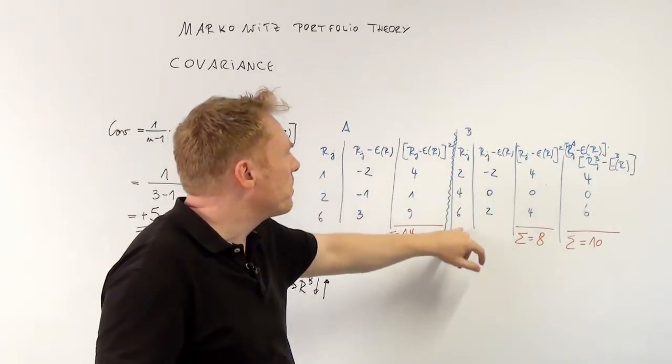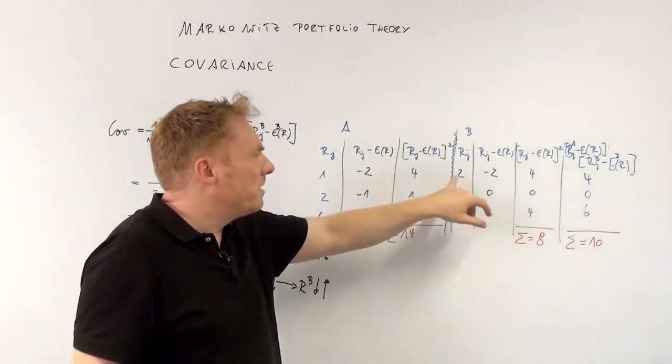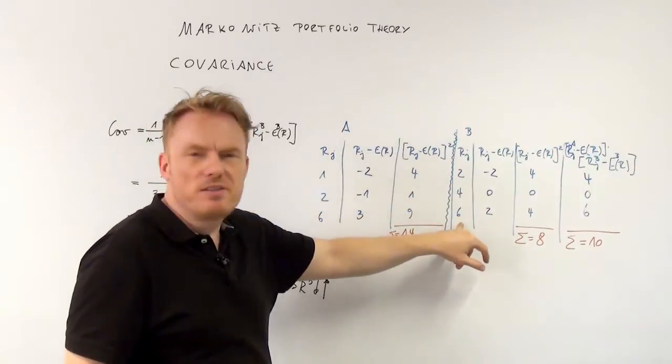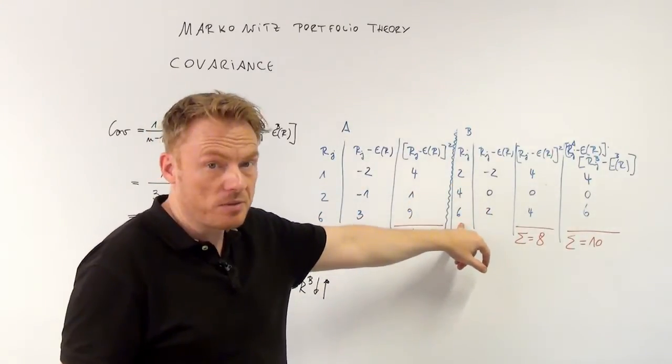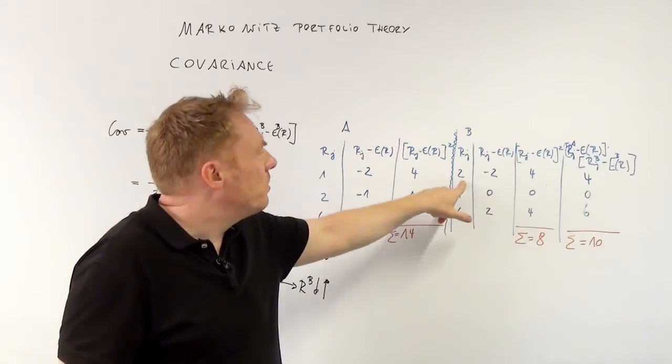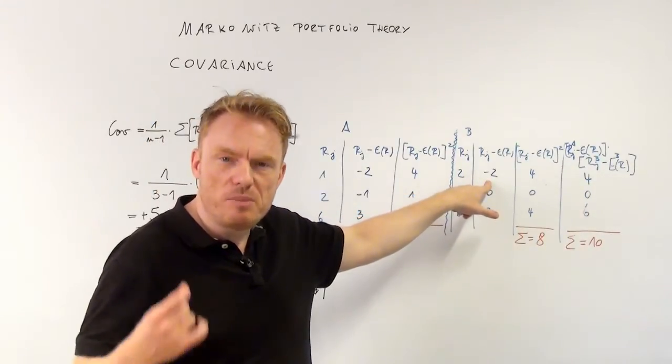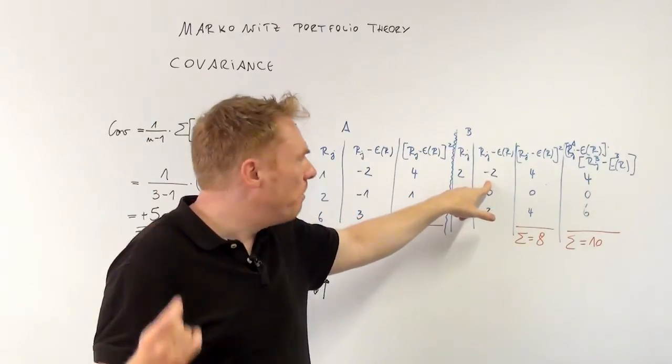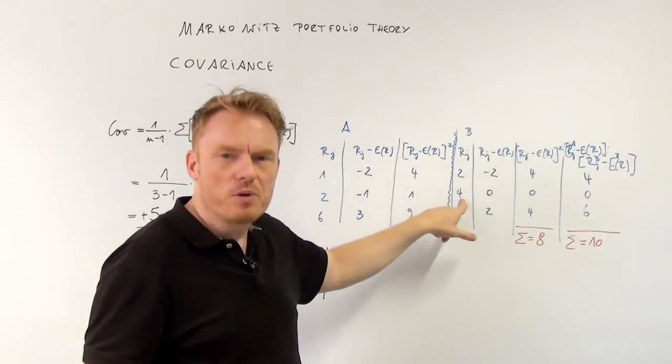Share B: 2 and 4 and 6. The expected value 2 plus 4 plus 6 is equal to 12. 12 divided by 3 is 4. So 2 minus expected value, 2 minus 4, is equal to minus 2. 4 minus 4 is equal to 0.